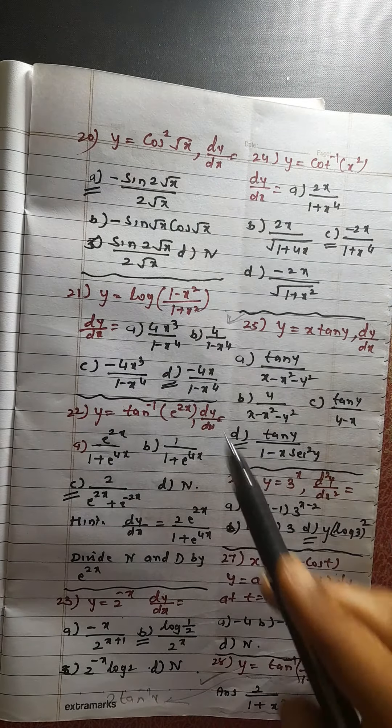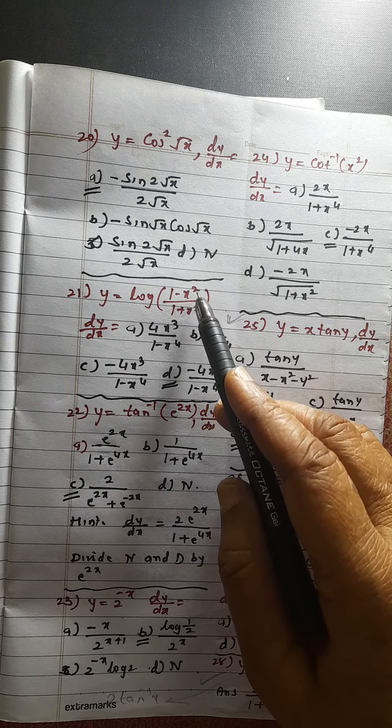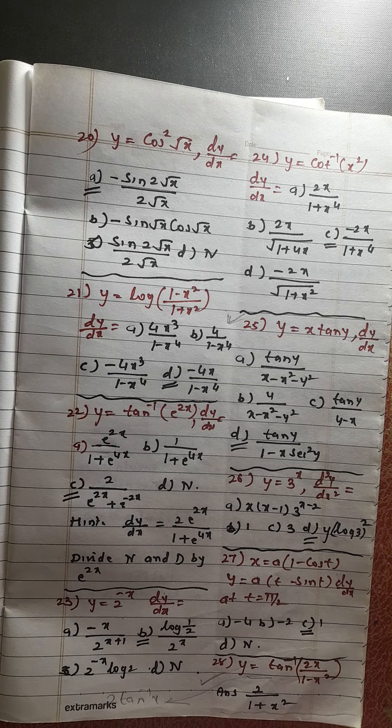All other problems are very easy. Derivative of this will become 1 upon this into u by v form you have to use. So these are all easy problems. You try. Check your answers. So I will stop here.